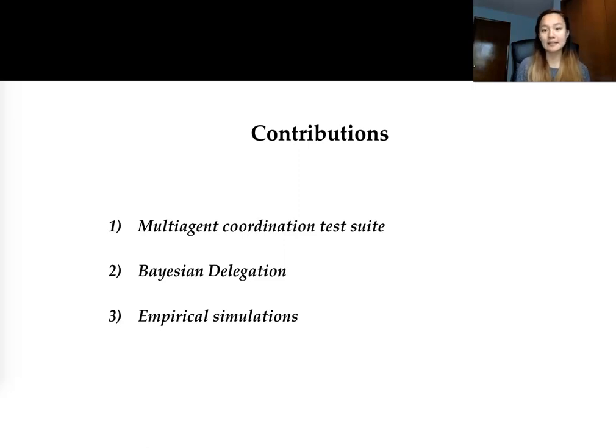Which is our learning mechanism for enabling agents to rapidly infer a subtask of other agents in a decentralized manner. And finally, three will show some empirical simulations which demonstrate the importance of Bayesian delegation, as well as some other methods that we introduce.